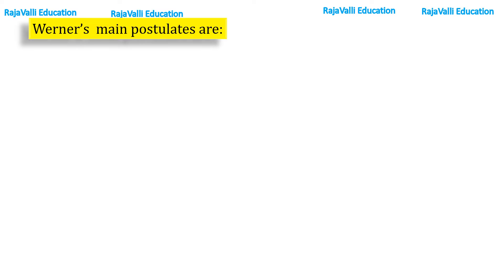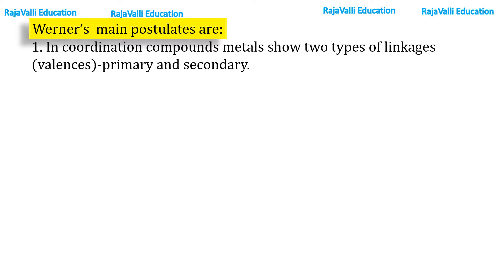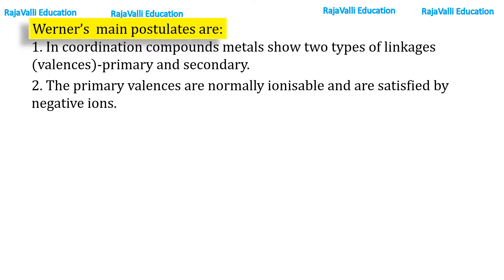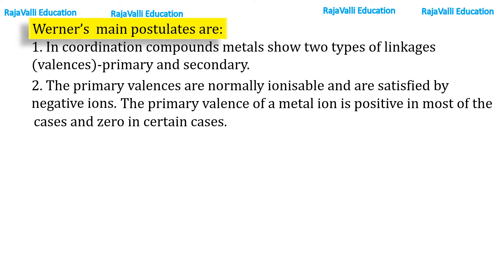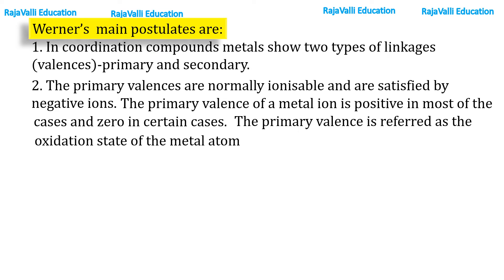Before going to primary and secondary valences, first we see Werner's postulates. In coordination compounds, metals show two types of linkages: primary valency and secondary valency. The primary valences are normally ionizable and are satisfied with negative ions. The primary valence of a metal ion is positive in most cases and zero in certain cases. The primary valence is referred to as the oxidation state of the metal ion.